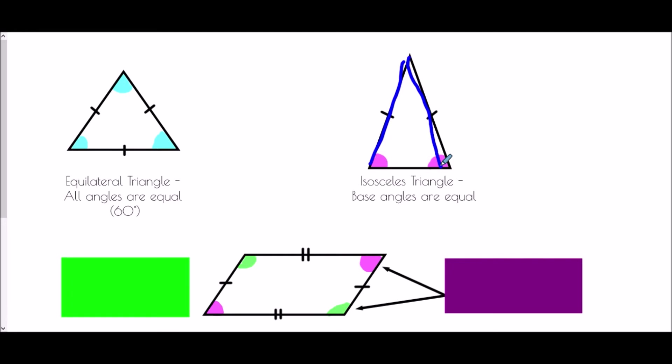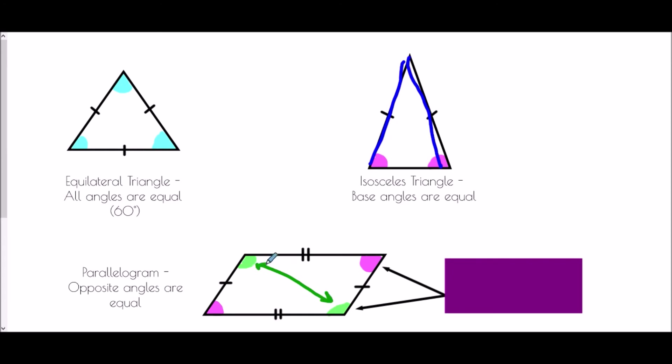Next I'm looking at a parallelogram — it has two pairs of parallel sides. Special forms include a rhombus, where all sides are equal, and also rectangles and squares, which are special types of parallelograms. The rules apply for all of those shapes. First: opposite angles in a parallelogram are equal. The two angles coloured green are opposite and the same size; the two coloured purple are opposite and equal.